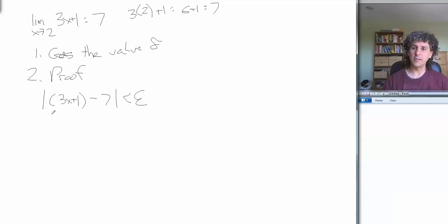So what do we mean here? 3x plus 1 minus 7. Well, we can lose those parentheses. That's just 3x plus 1 minus 7. And so that's really the absolute value of 3x minus 6. But since 3 is just a number, we can take it out of the absolute value bar. So that's really the absolute value of 3 times x minus 2, which has to be less than epsilon.